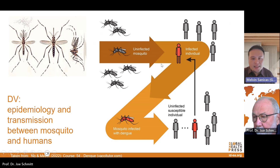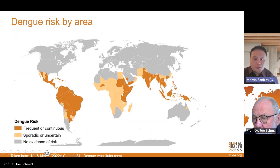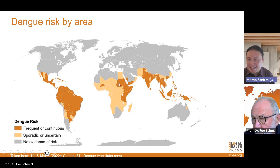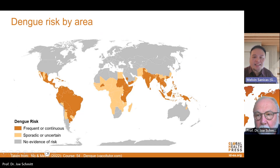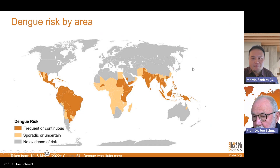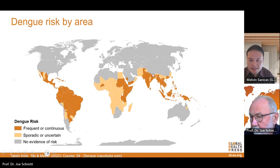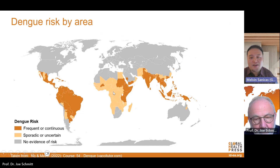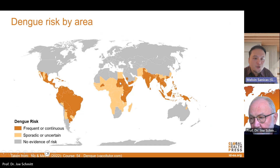On the next slide, you will see that the disease is really common in many popular tourist destinations in the Caribbean, Central and South America, Southeast Asia, and the Pacific Islands. Countries where dengue is a big problem are shaded darker on the map. Anyone who lives in or travels to these areas is at risk for infection, so please make sure to find country-specific travel information before you travel.